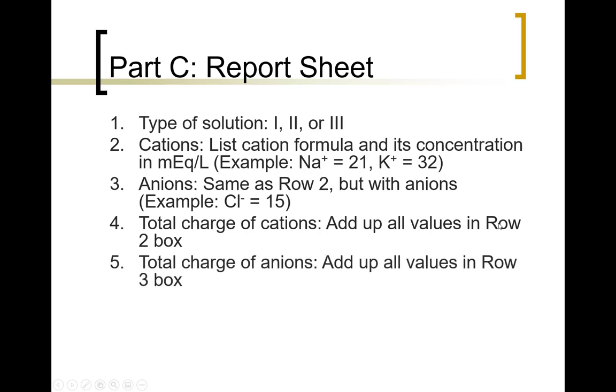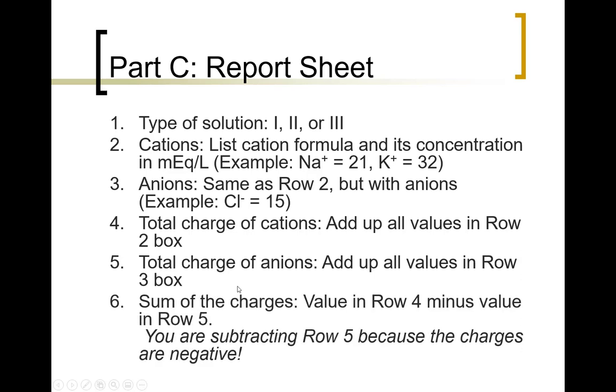Row five, same idea as in row four, except you're adding up the anions this time. Again, as positive numbers. Finally, in row six, you will add up the value from row four and row five.